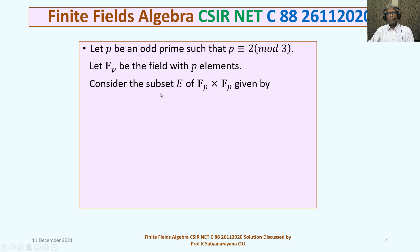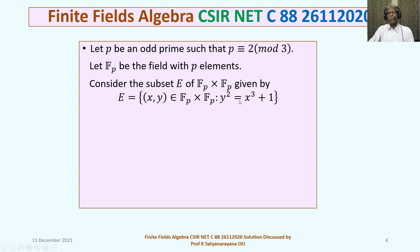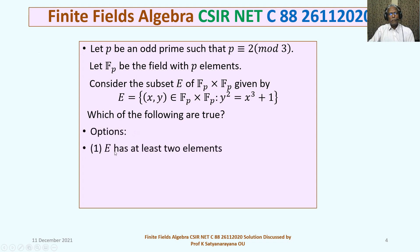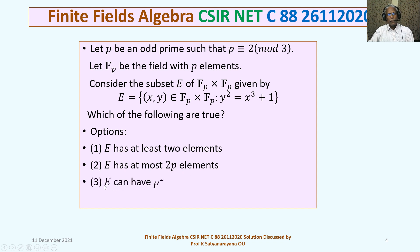Consider the subset E of Fp × Fp given by E is the set of all ordered pairs (x, y) belonging to Fp × Fp such that y² = x³ + 1. Which of the following are true? Option 1: E has at least 2 elements. Option 2: E has at most 2p elements. Option 3: E can have p² elements. Option 4: E has at least 2p elements.